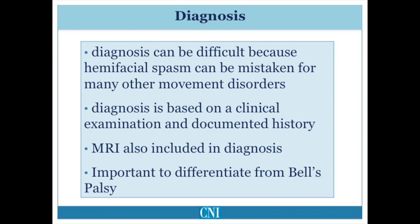It is important to differentiate hemifacial spasm from other involuntary movement disorders which may affect the face. The most common of these is Bell's palsy, which is a weakness of the face caused by a lesion of the facial nerve. In Bell's palsy, patients typically have a relatively sudden onset of weakness of one side of the face caused by a viral infection. As the facial nerve recovers over several weeks, patients may develop twitching of the face due to abnormal regrowth of the facial nerve, including twitching of the lower face when blinking, or blinking when smiling, due to misguided growth of nerve fibers to different parts of the face.